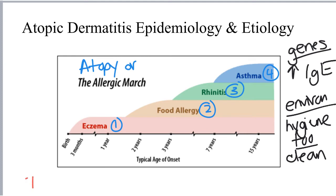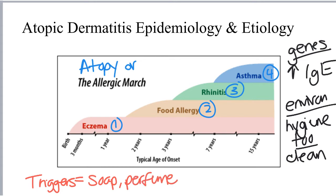There are some environmental triggers that can cause the onset of a dermatitis exacerbation. These include irritants, whether that's clothing or anything that touches the skin, soaps, perfumes, air pollution, stress, and the weather, which can sometimes predispose to a dermatitis exacerbation.